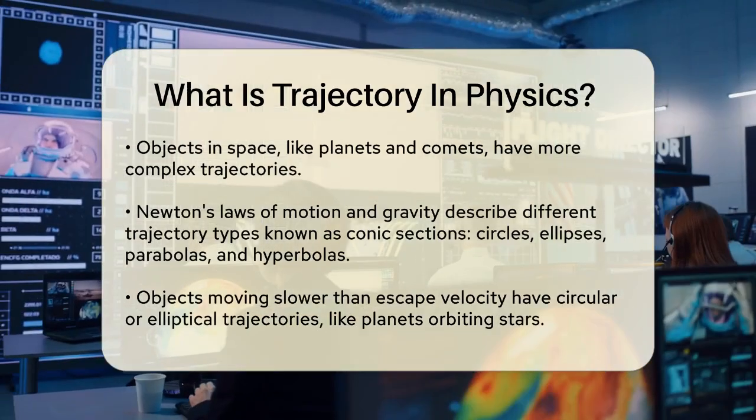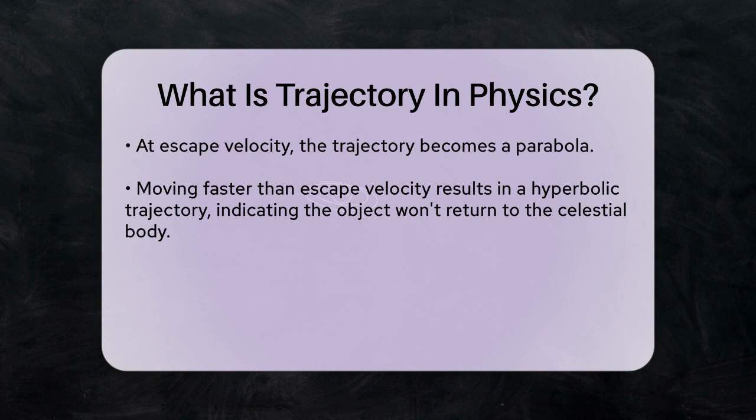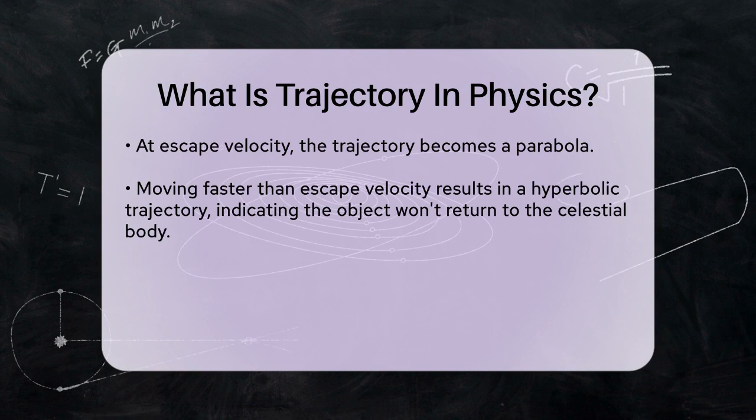If an object is moving exactly at the escape velocity, its trajectory will be a parabola. If it's moving faster than the escape velocity, the trajectory will be a hyperbola, meaning the object will never return to the celestial body it's escaping from.